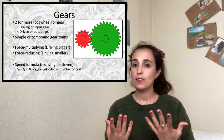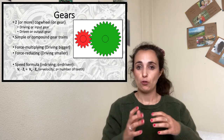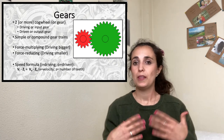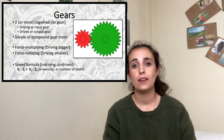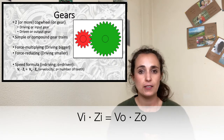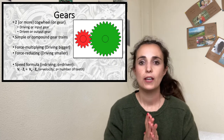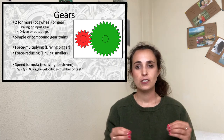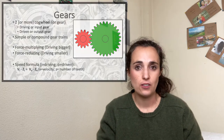As with pulleys, we can force multiply or force reduce the speed of the movement. If we want to force multiply, the driving gear should be the biggest one; if we want to force reduce, the smallest gear should be the driving one. As with pulleys, there is also a formula to calculate the speed — it's a direct proportion, but instead of using the diameter, the key data here is the number of teeth (Z).